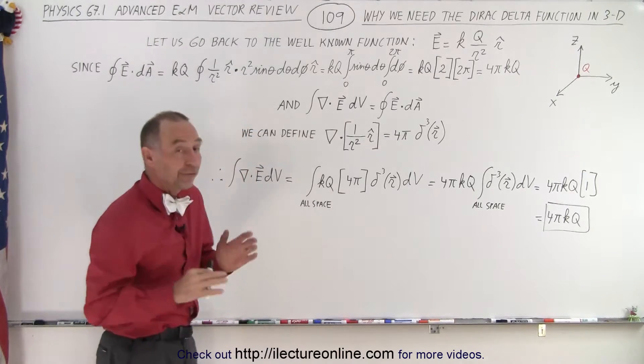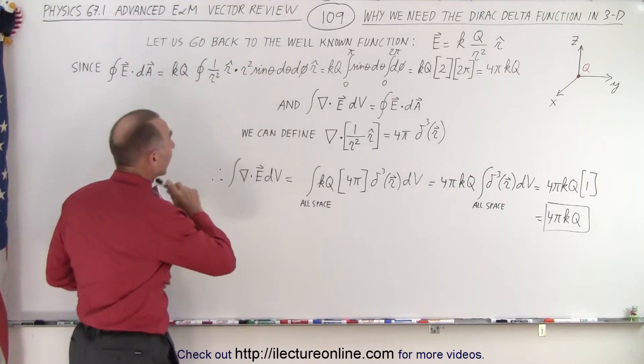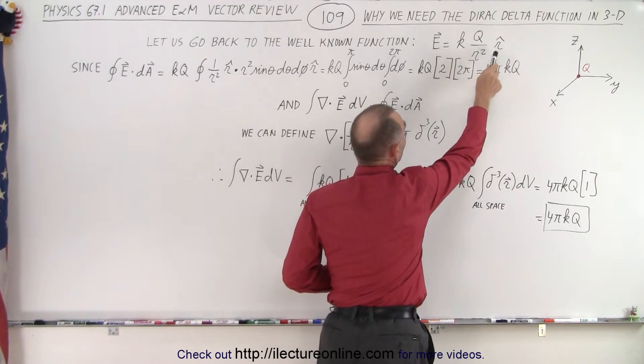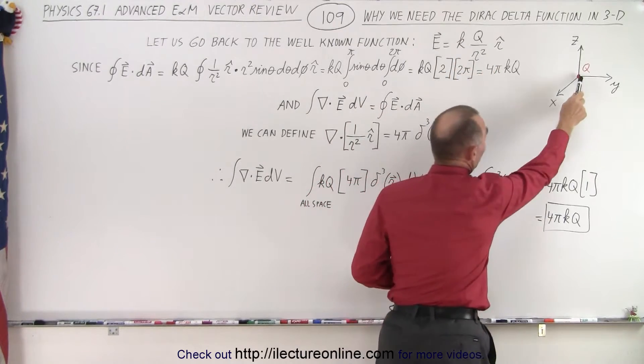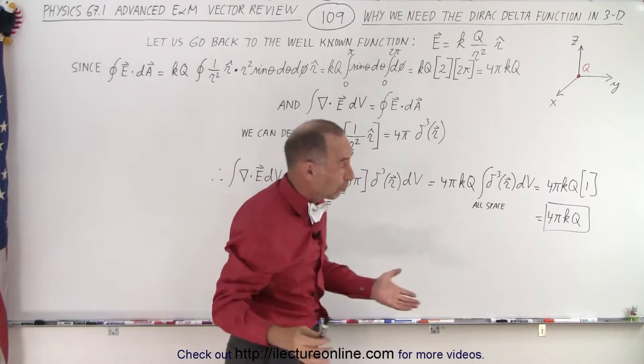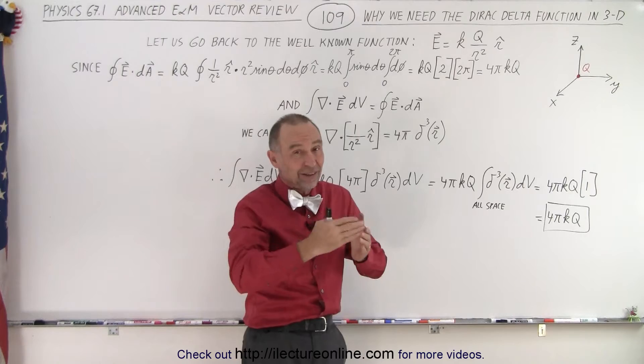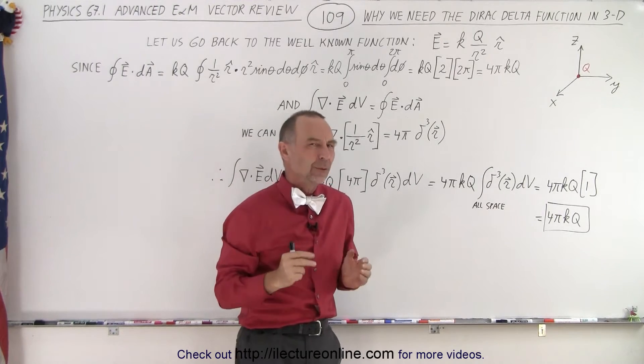Now let's take a look again at the very famous equation: the electric field is equal to kq over r squared in the r direction for a point charge placed at the origin. Let's say the point charge equal to q, which means that there's charge at the origin where x, y, and z equals zero and no charge anywhere else.